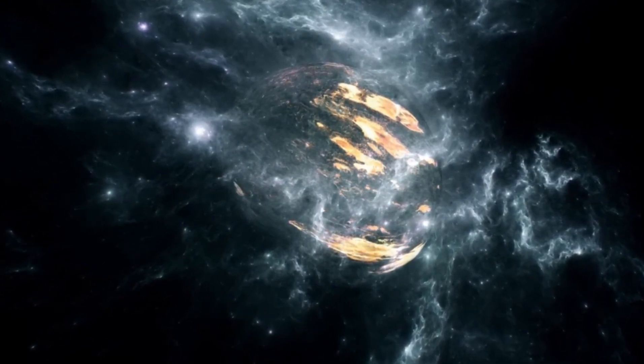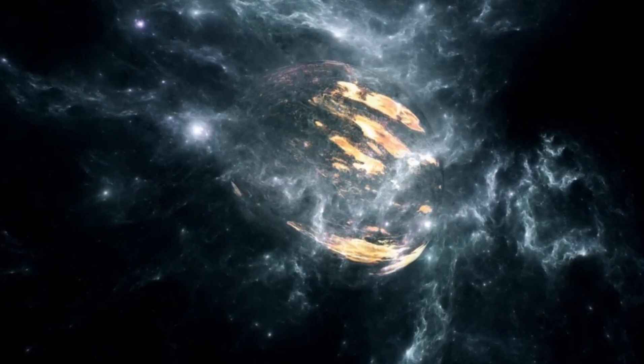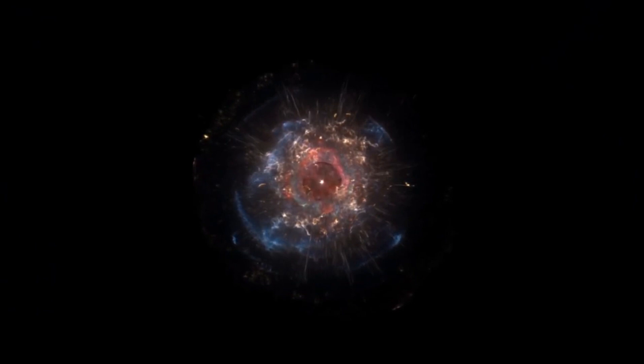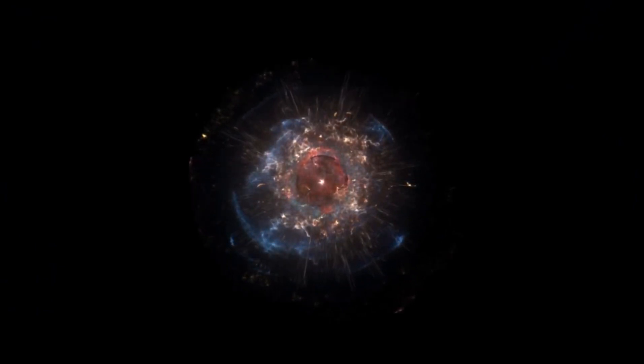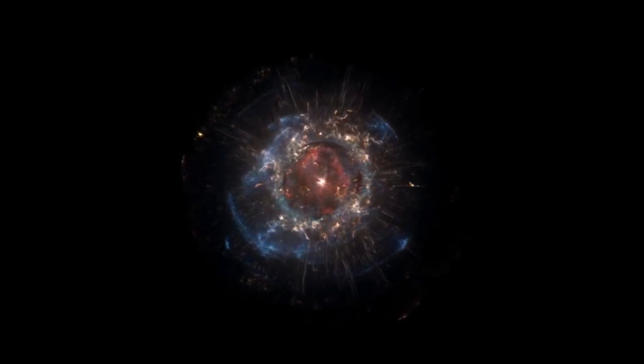This incredible size is not just a testament to Betelgeuse's physical attributes, but also speaks to its stage in the stellar life cycle. As a red supergiant, Betelgeuse is in the twilight of its existence, a phase characterized by expansion and cooling following a lifespan fusing hydrogen into helium in its core.